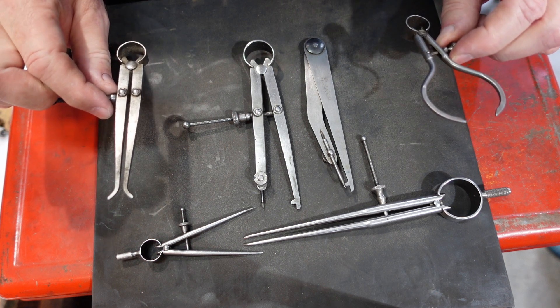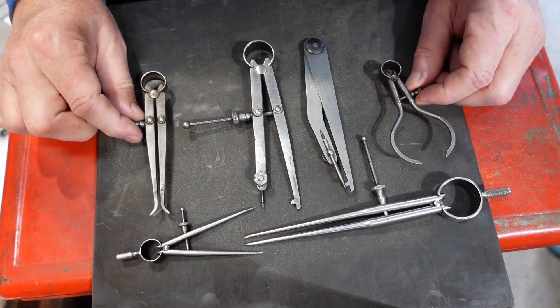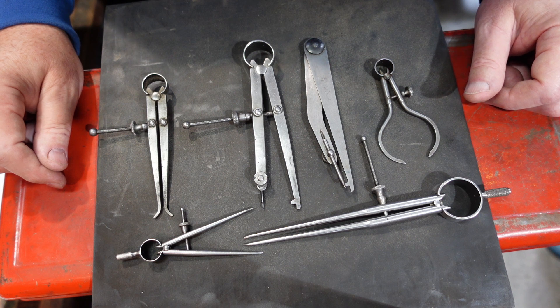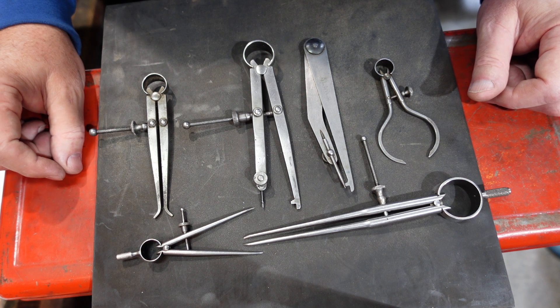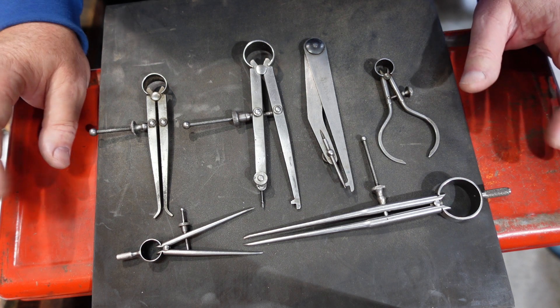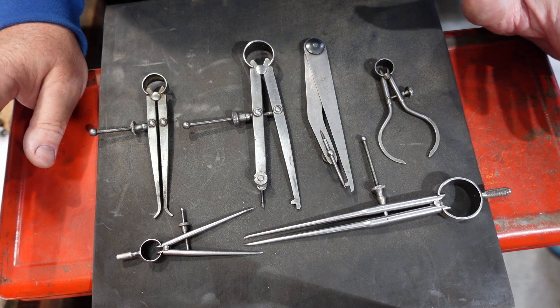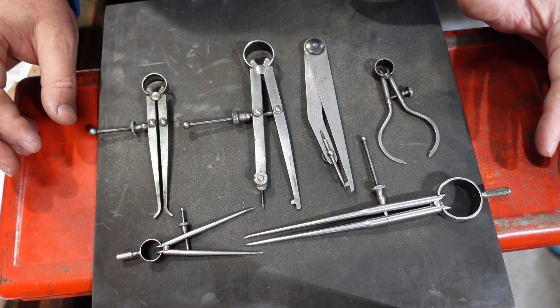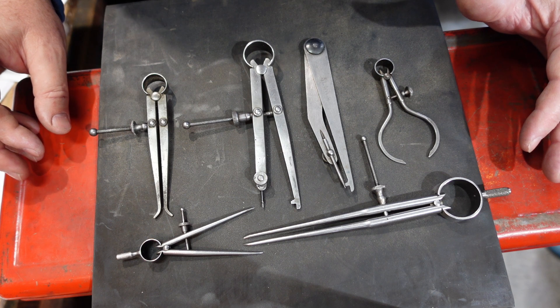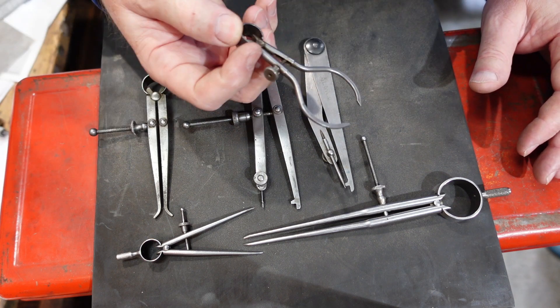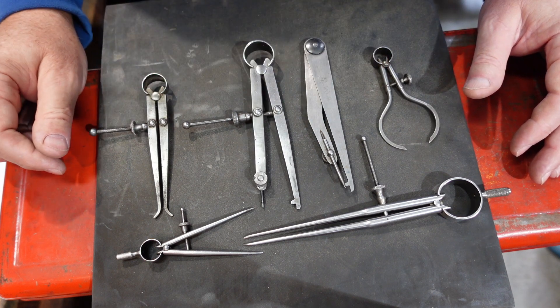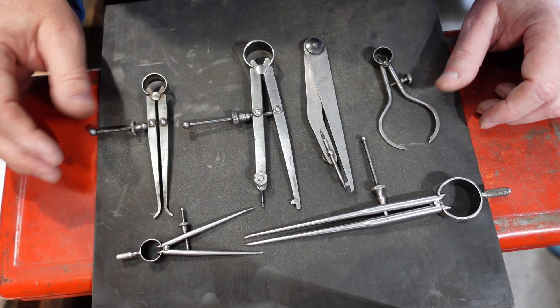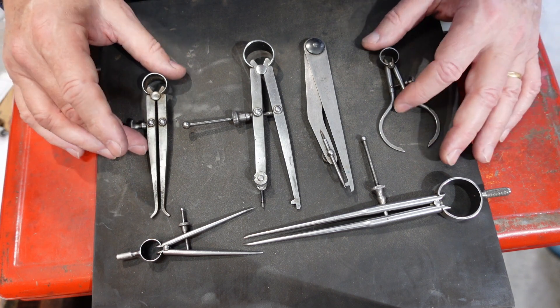Not used very much these days. They're more one of those things before lathes had dials on them. Woodworkers still use them. But if you can imagine if you've got a spinning shaft you don't want to be using these to try and measure the outside diameter because if it grabs you you've got all sorts of pain.